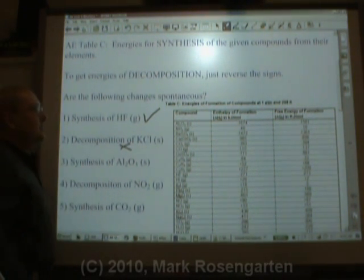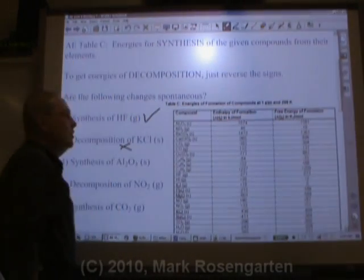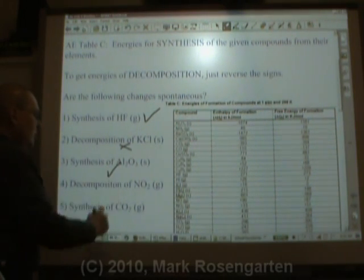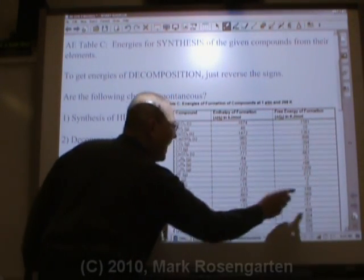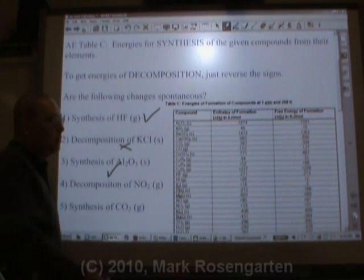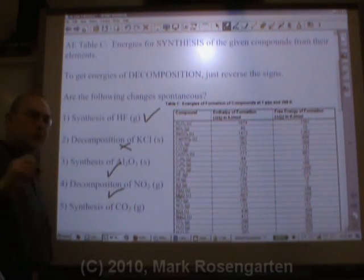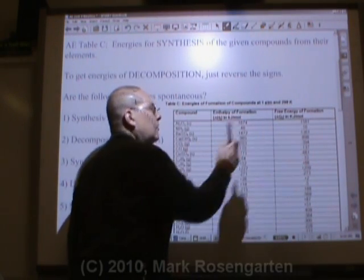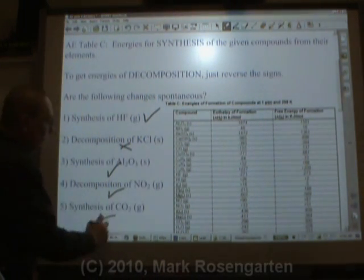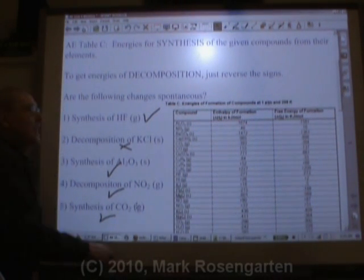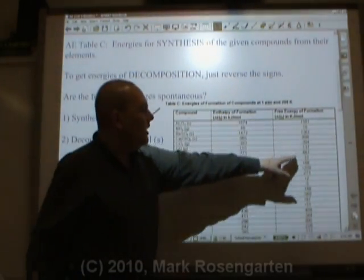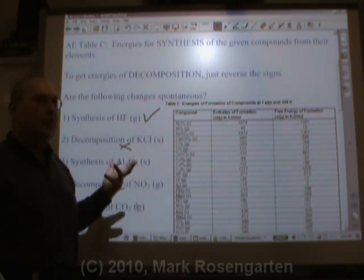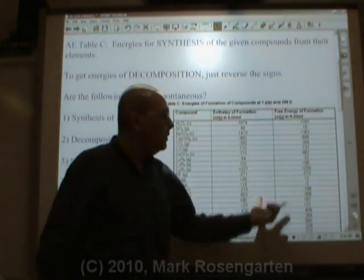To synthesize aluminum oxide: the synthesis of that compound has a negative delta G — spontaneous. Decomposing NO₂ gas: NO₂ has a delta G of formation of +51, which means decomposing it would be −51 — negative delta G, spontaneous. Synthesis of CO₂: CO₂ has a delta G of synthesis of −394, so synthesis would be spontaneous. To summarize: if delta G is negative, it's spontaneous; if delta G is positive, it's not spontaneous. The table gives values for synthesis, so to get energies of decomposition, simply reverse the signs.